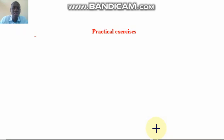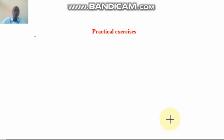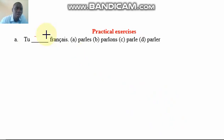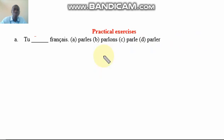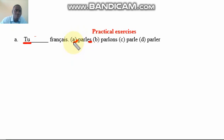Now for practical exercises, I don't want to dwell too much on the conjugation — you already have the formula from the first example. Let's look at the exercises. 'Tu ___ français' — you must take note of the personal pronoun. This is 'tu,' so you go with ES at the end: 'tu parles français.'